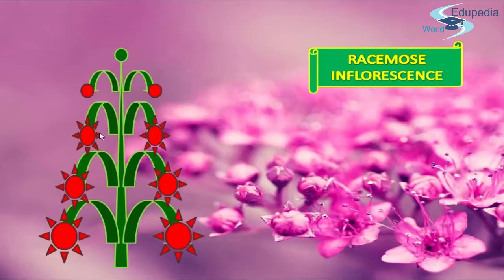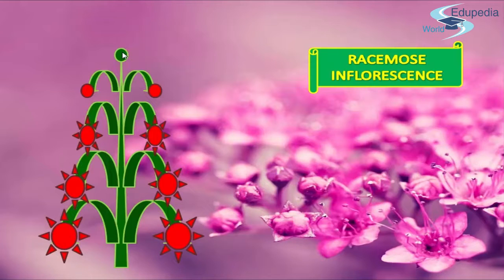In determinant inflorescence, the terminal axis ends with a flower. The youngest flowers are found at the bottom of the elongated axis or on the outside of the truncated axis. During the flowering time, the apical meristem produces a flowering bud, arresting the growth of the peduncle. That means it has a determinate length. The axis does not continue to grow indefinitely.